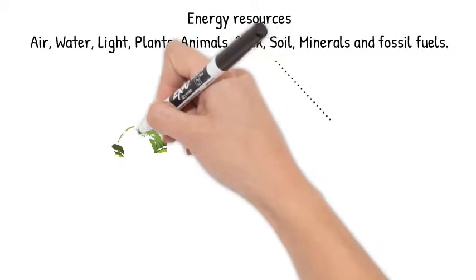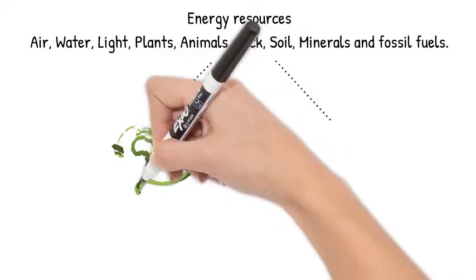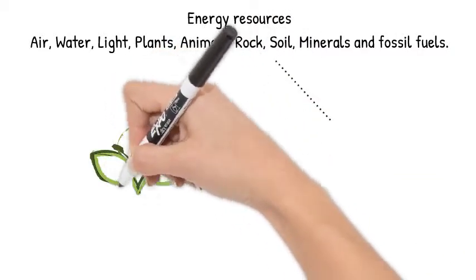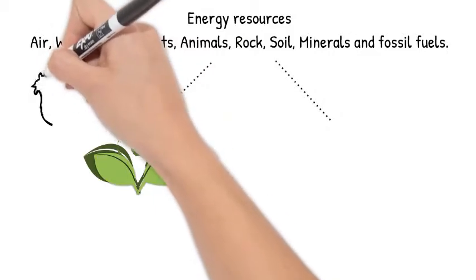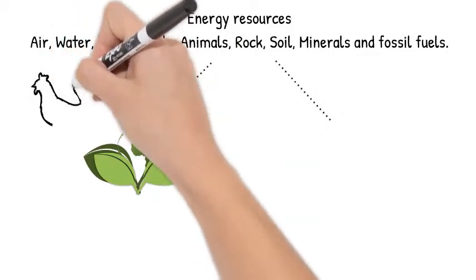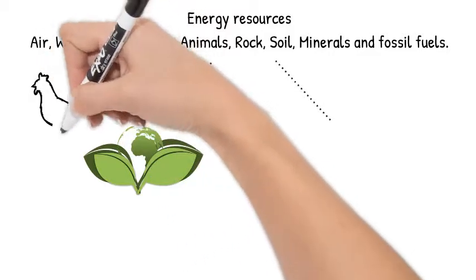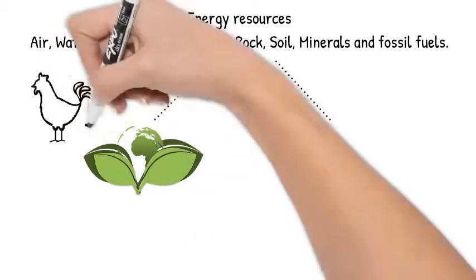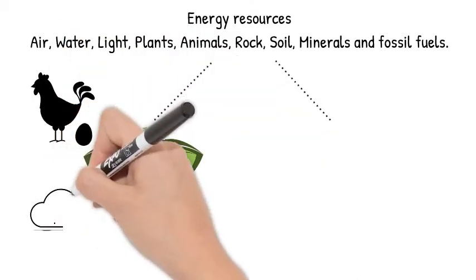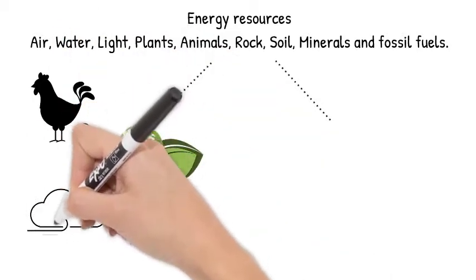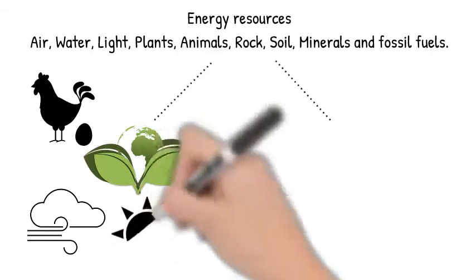Renewable energy is energy that can be replenished naturally within a short time frame, or replenished at a rate faster than what we use them up. Examples of renewable energy types are animals, as they're able to breed or produce food for us such as eggs and milk at a reasonable rate.